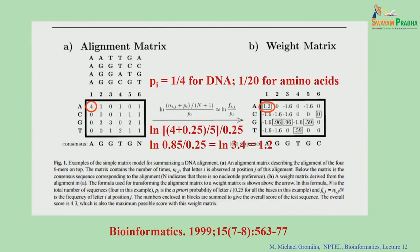Like the PSSM, there is another matrix called the weight matrix, also frequently used in prediction algorithms. For example, given 4 different DNA sequences, we first construct the matrix for the occurrence of each nucleotide at each of 6 positions across 4 sequences. For example, position 1: all 4 sequences have A; position 2: three G's and one A; position 3: one T and three G's. We fill this matrix based on the sequence alignment.